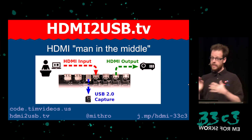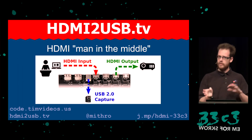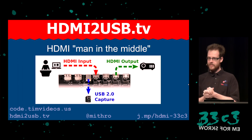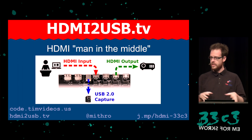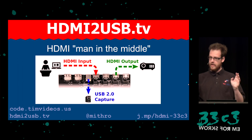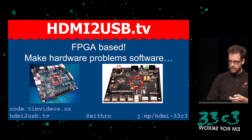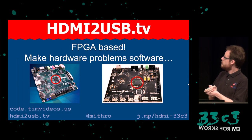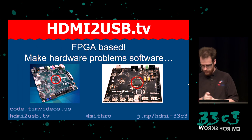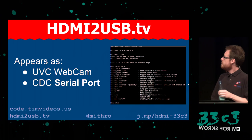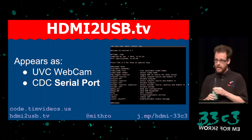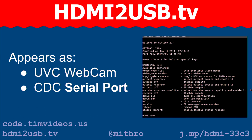Our device works similarly to his, except ours wasn't designed for capture — mine was made specifically for that: to sit between the laptop and the projector and get a high-definition capture. We use FPGA to do this because it bridges hardware and software problems, and I prefer software problems to hardware ones. The way it works is we use a UVC webcam — like for Skype or Google Hangouts — where you don't need drivers. You can use it on Mac or Linux.